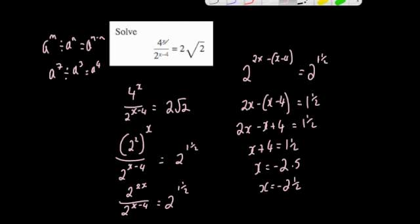So the answer is x equals minus 2 and a half. The main point with a question like this: first change everything to the same base. 4 was written as 2 squared, giving 2 to the power of 2x. The 2 root 2 becomes 2 to the power of 1 and a half. Then subtract the powers when dividing, equate the resulting powers, and solve.